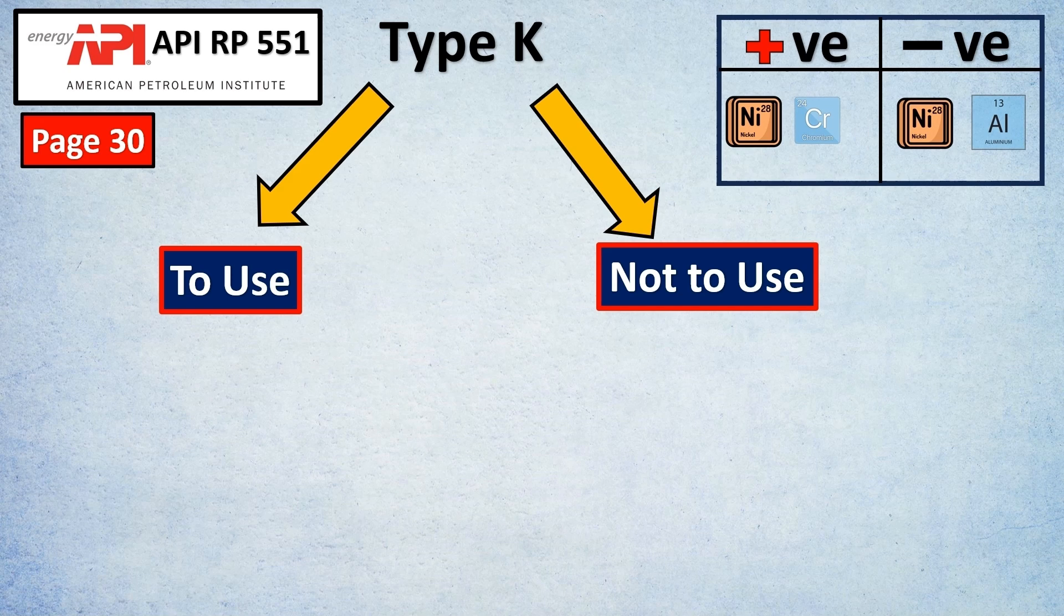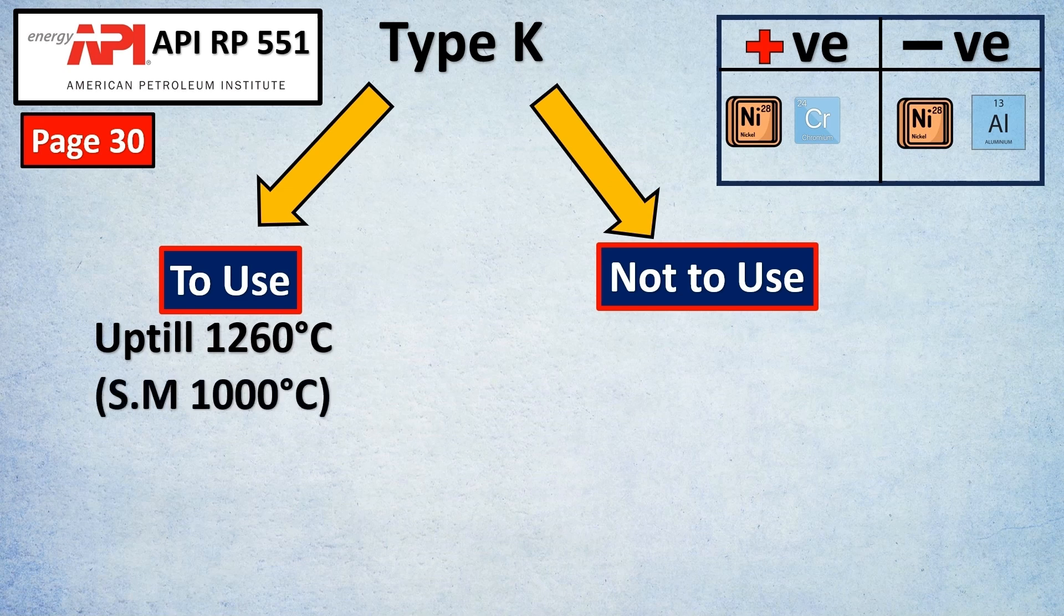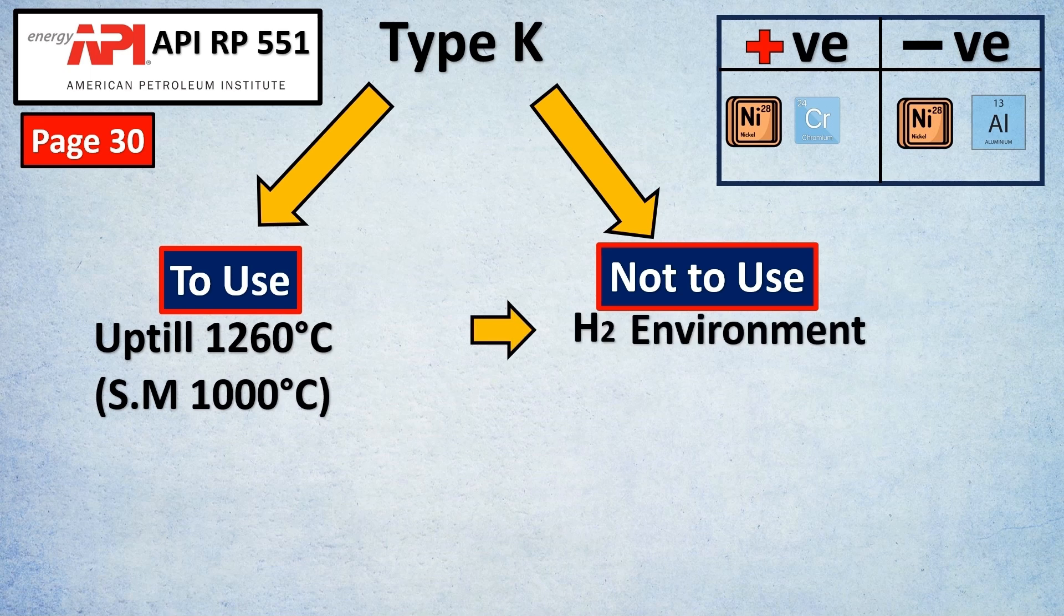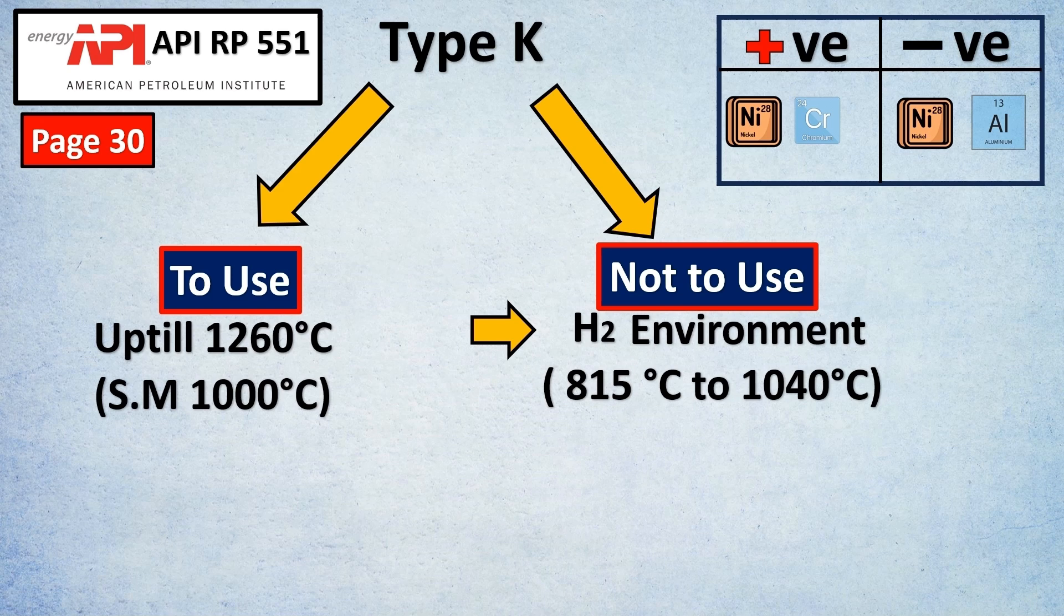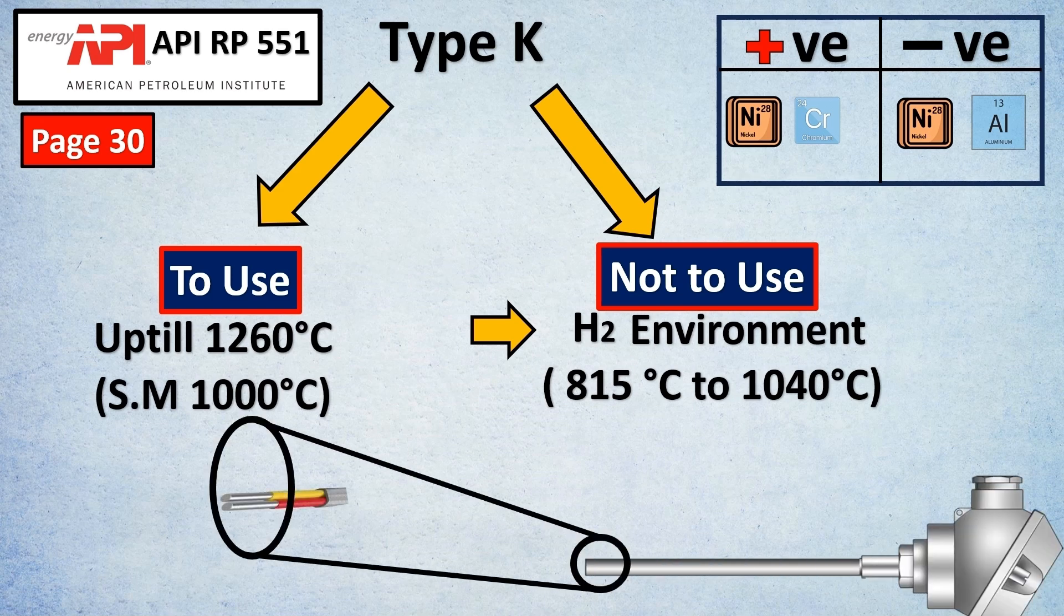Type K can be used up to 1260°C, but as a safety margin I personally recommend around 1000°C. You cannot use this in H2 environment as per API RP standard, especially between 815°C to 1040°C. Why? Because at such high temperatures, hydrogen breaks down and the H molecules hit the sheath and enter inside the thermocouple, damaging it and giving false readings.